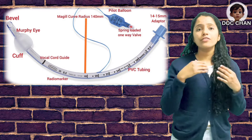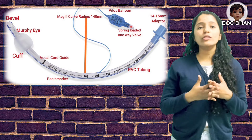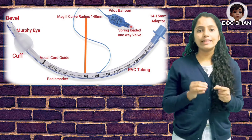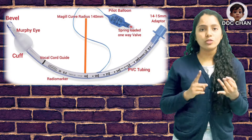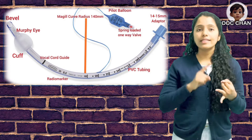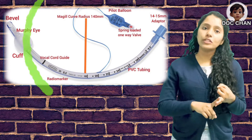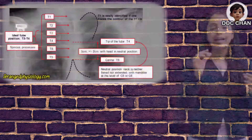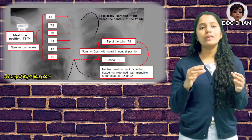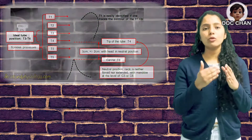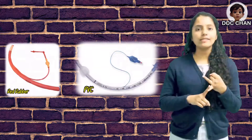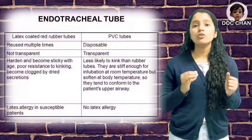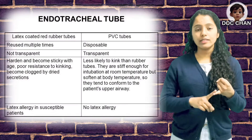Ideally, after intubation, you need to confirm the location by auscultating — also called 5-point auscultation — and a chest X-ray after intubation. Because the endotracheal tube has a radiopaque line, the ideal position should be about 2-5 cm above the carina. There are mainly two materials in use, but most commonly we use PVC, which is polyvinyl chloride. The other material available is red rubber.